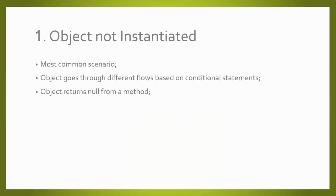Our first scenario is also the most common one. It usually happens when an object is initialized and goes through different flows based on conditional statements. You initialize your object and it is supposed to be instantiated afterwards in one of those conditional statements, but you fail to instantiate it in one branch, and afterwards when you try to access this object, it is going to be null. It also happens when receiving null objects from methods — we do not validate the returned object before accessing it, and we receive this exception.